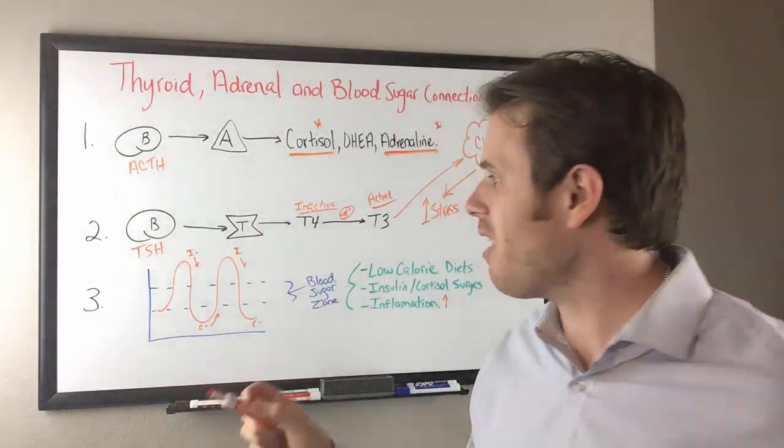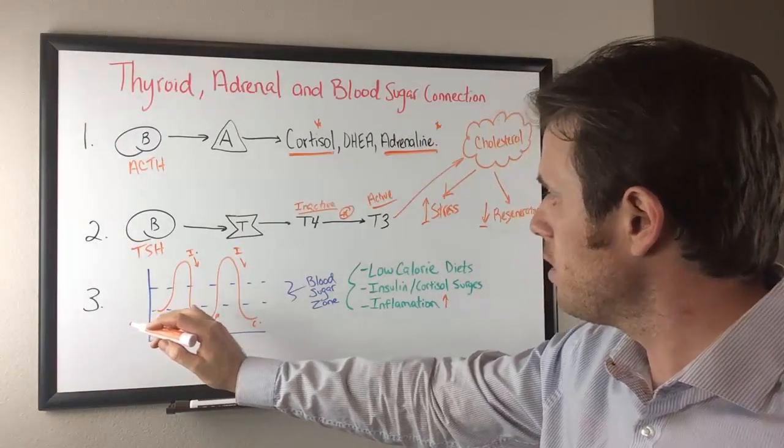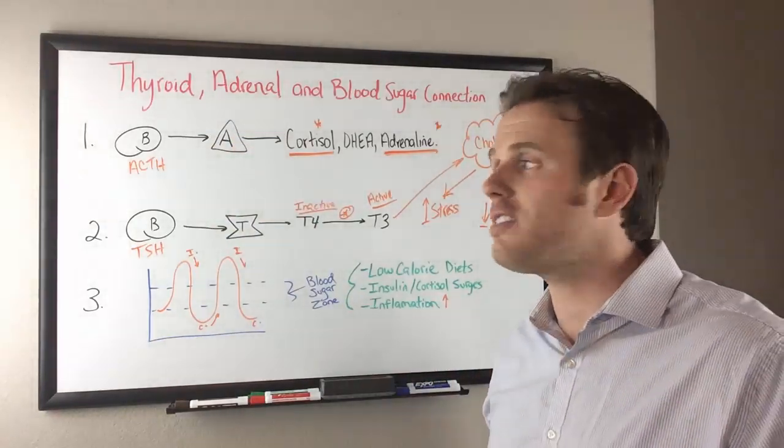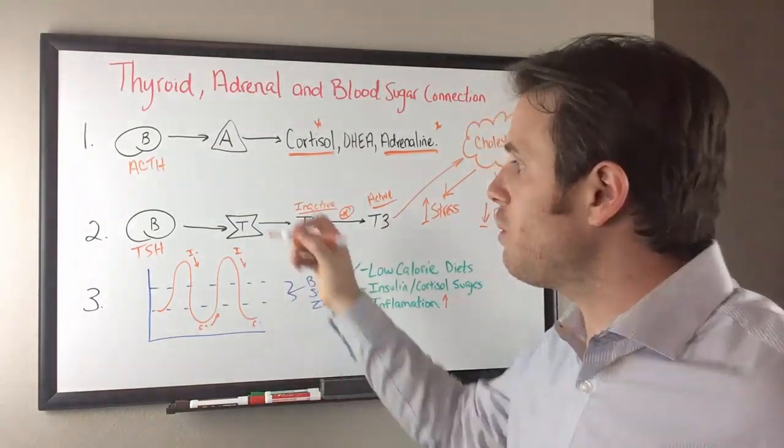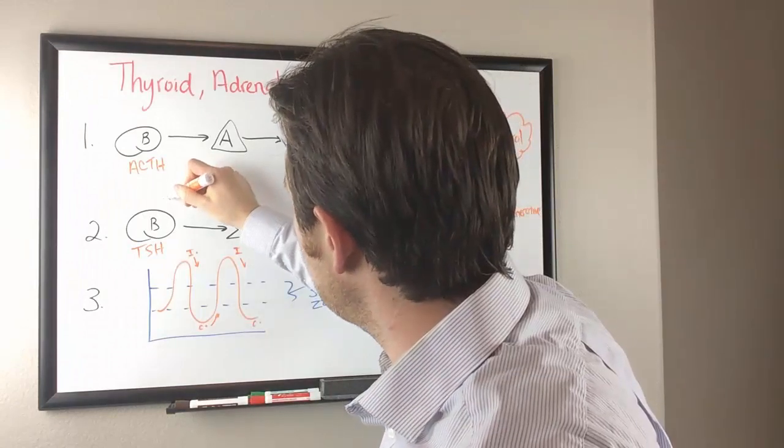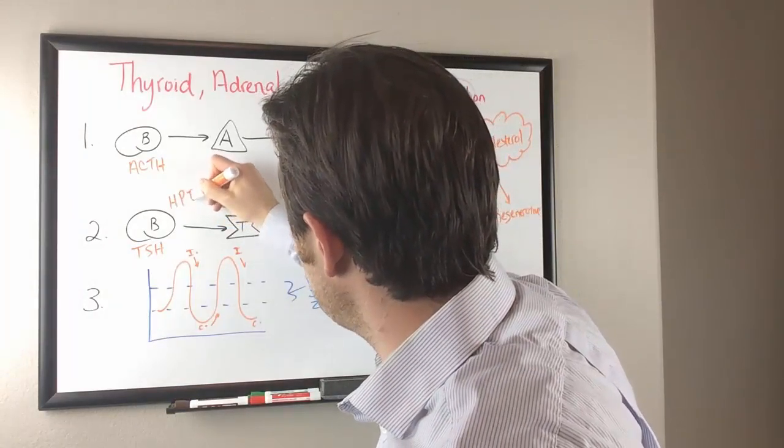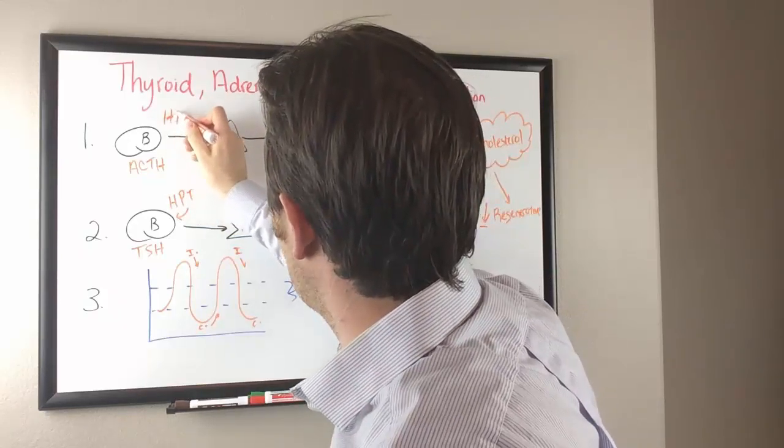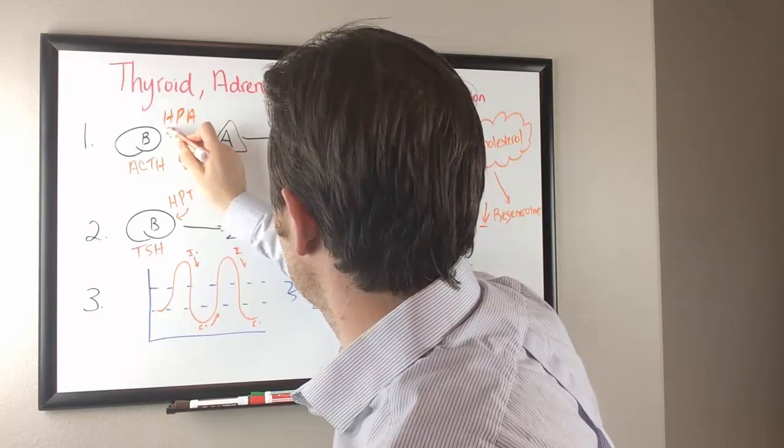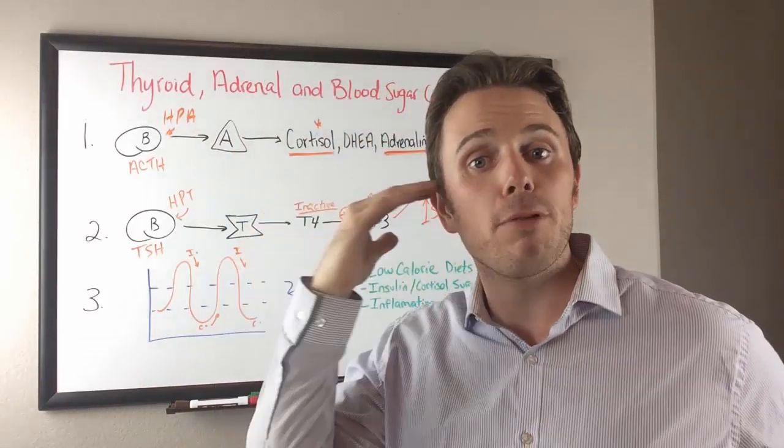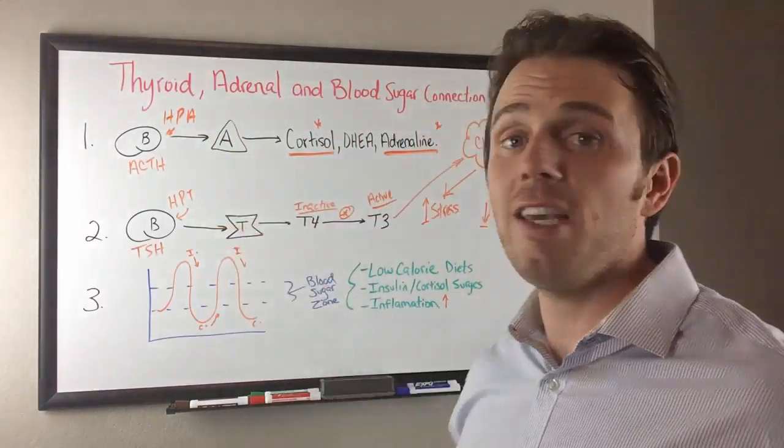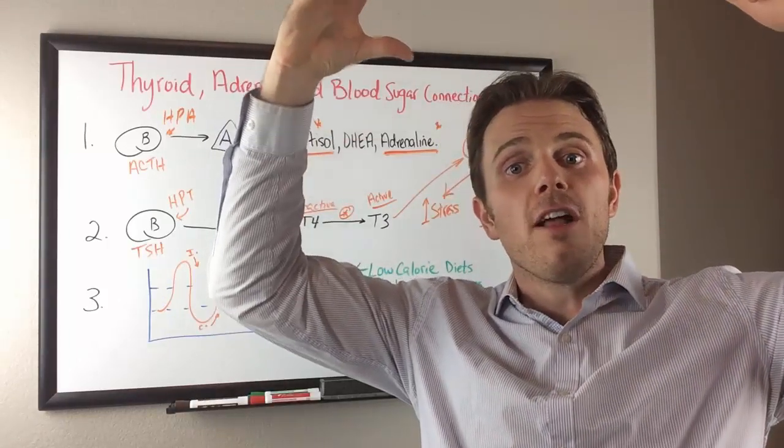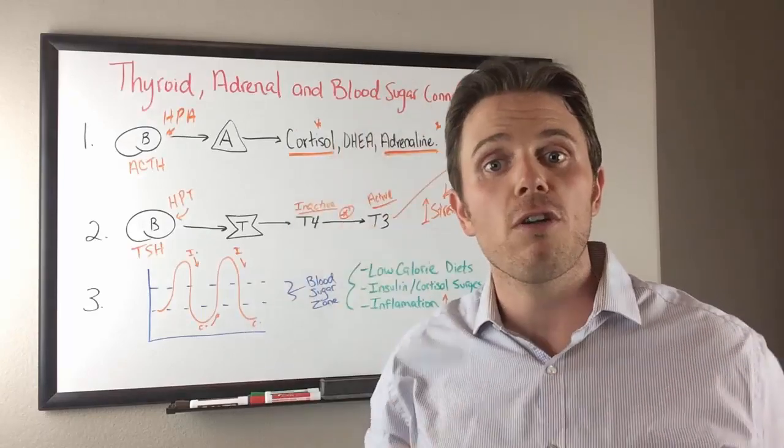So you can see there's a lot of things here in which our blood sugar down here connects up to our thyroid and connects up to our adrenals. Not to mention the constant stress actually starts causing what's known as HPT axis dysfunction, HPT and HPA. The HP's all stand the same. That's your hypothalamus pituitary and then the T for the thyroid, A for the adrenals.